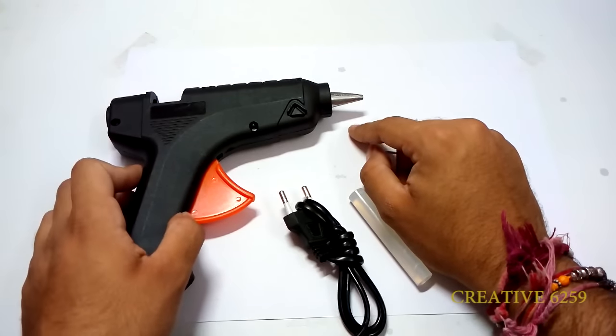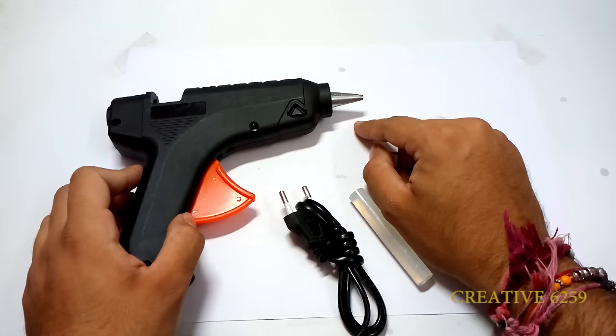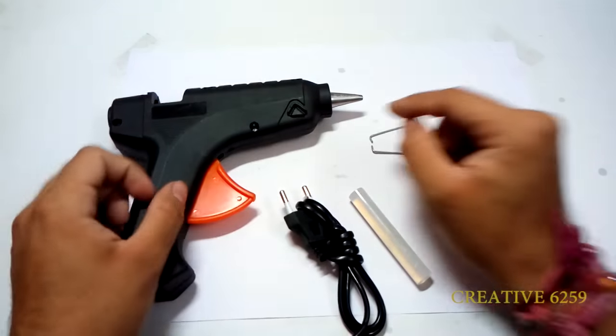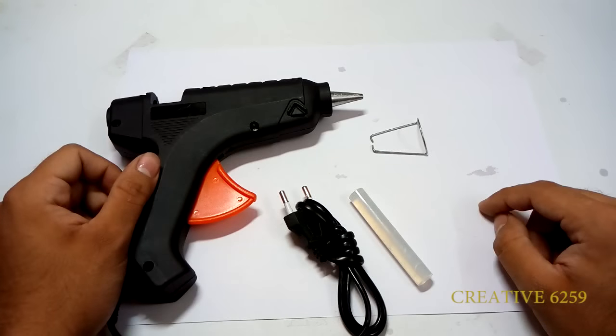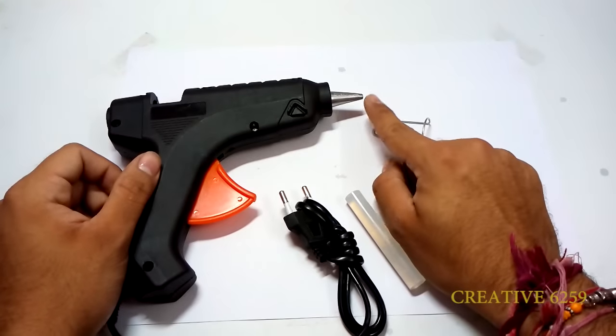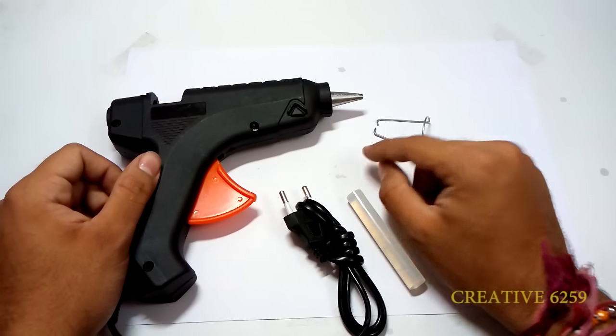This nozzle gets very hot when we plug in the glue gun, so it can burn the skin or burn the watch or something like that which you wear on your hand. So please kindly remove the watch or cords if you wear on your hand before using the glue gun.